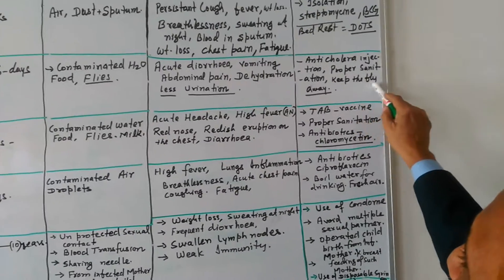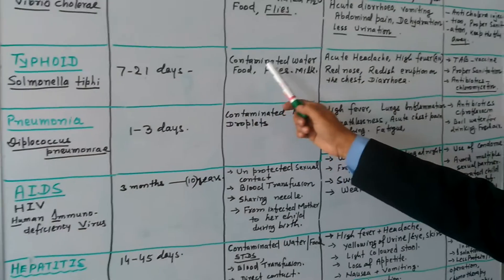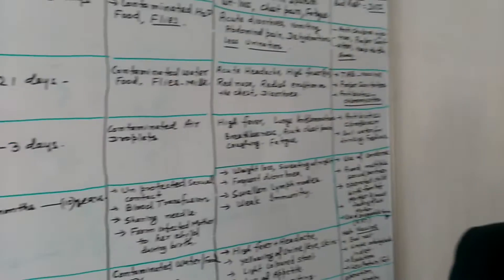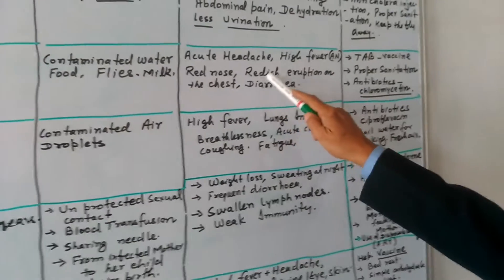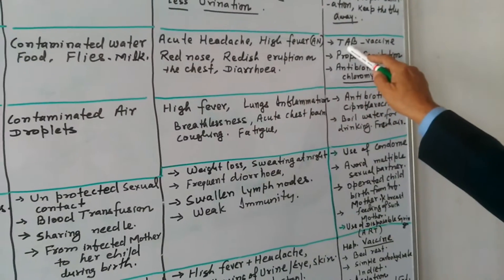Propulsion irritation and keep the fly away. Typhoid, we have a typhoid, 7 to 21 days the incubation period. Contaminated water, food, flies, milk is responsible. Acute headache, high fever, red nose, reddish eruption on the chest and diarrhea are the symptoms. TAB vaccine is available.